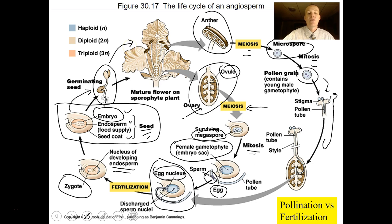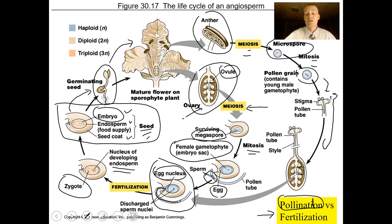That is the life cycle of a plant. Make sure you know it, be able to draw it, and understand it. Pollination is the carrying of pollen from one flower to another. Fertilization is the combining of the sperm and egg nucleus — the sperm cell coming down and joining with the egg.